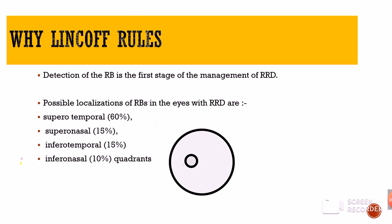So why do we actually need the Lincoff rules? In any case of retinal detachment, detection of the retinal break is the first stage in the management of rhegmatogenous retinal detachment. Because it is the break through which the liquefied vitreous will gain entry inside the subretinal space and lead to separation of the neurosensory retina from the retinal pigment epithelium. Therefore, before proceeding for surgery, identification of the location of the break is really, really important.